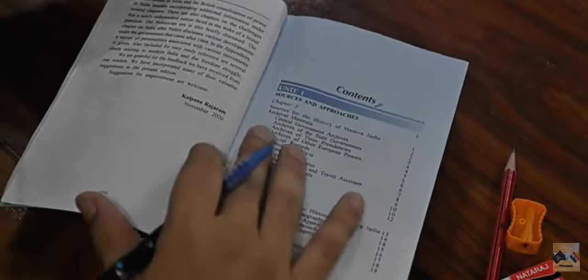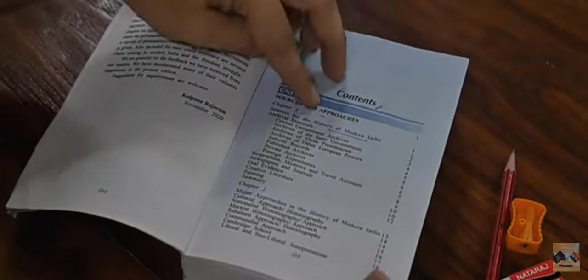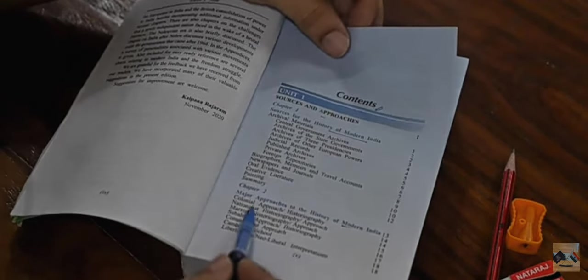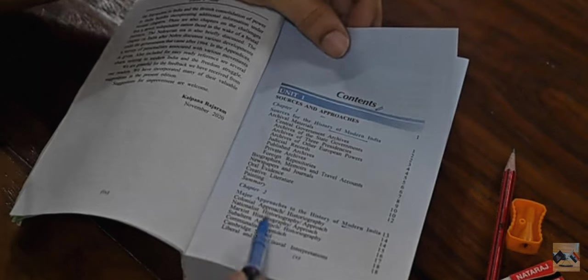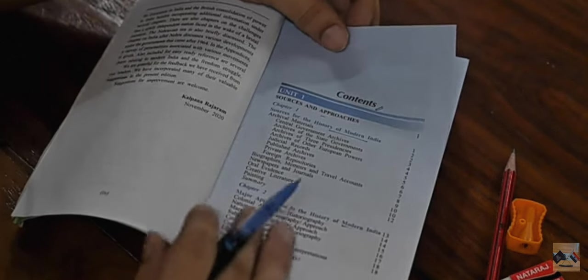So here, first of all, I always look at the table of contents. If you look at the table of contents here, you will see there are a lot of chapters that start with sources and approaches - what are the sources of history of modern India, what are the major approaches to the history of modern India: colonial approach, nationalist historiography, Marxist historiography, communist approach. All these different kinds of approaches are there.